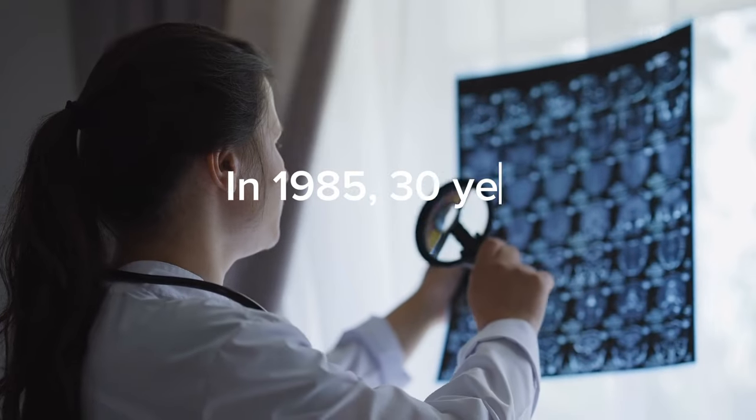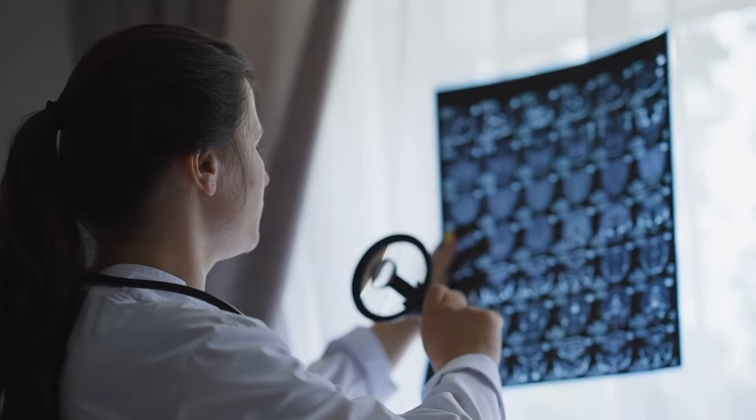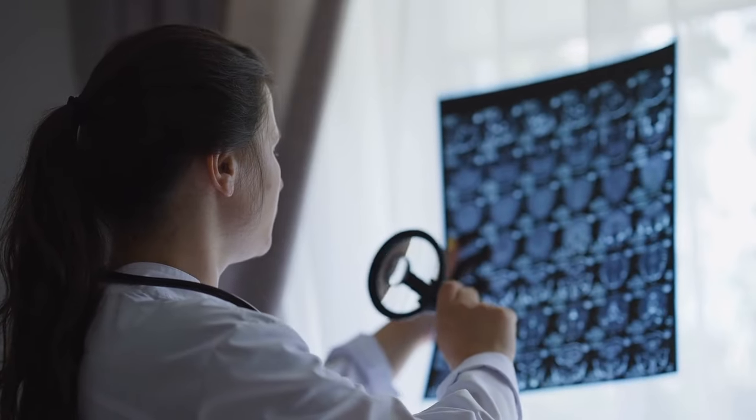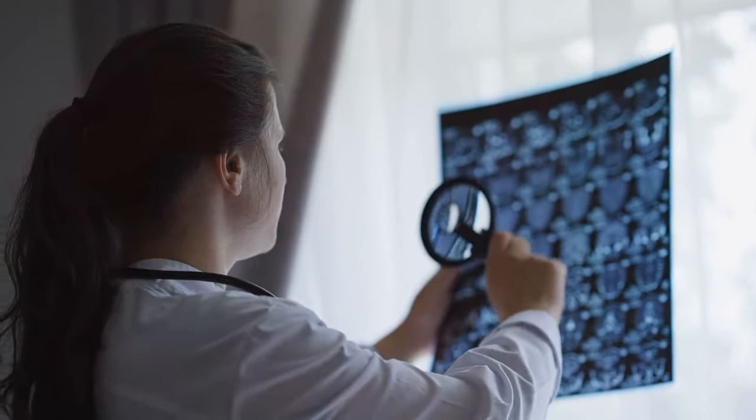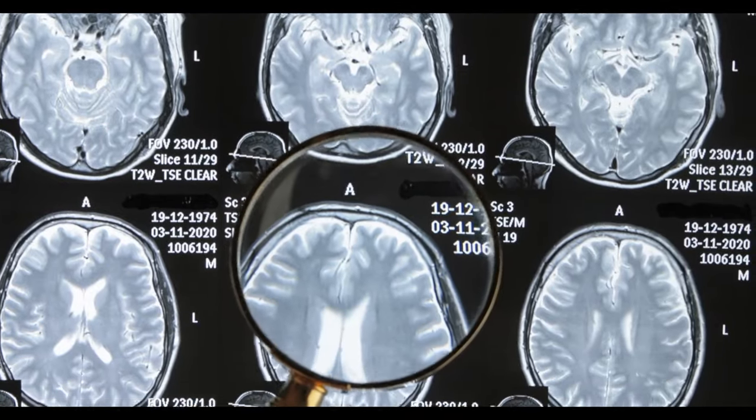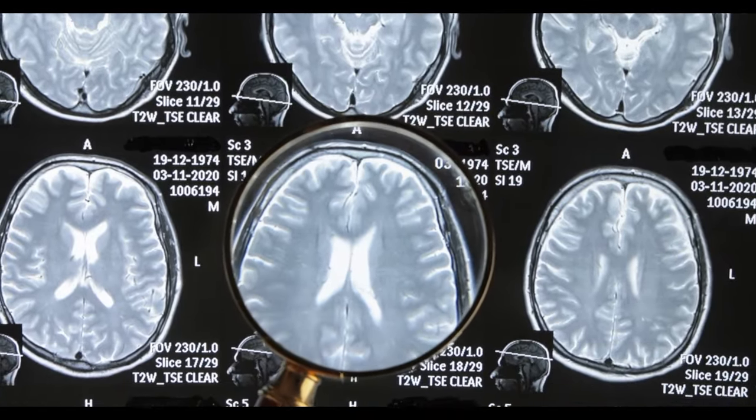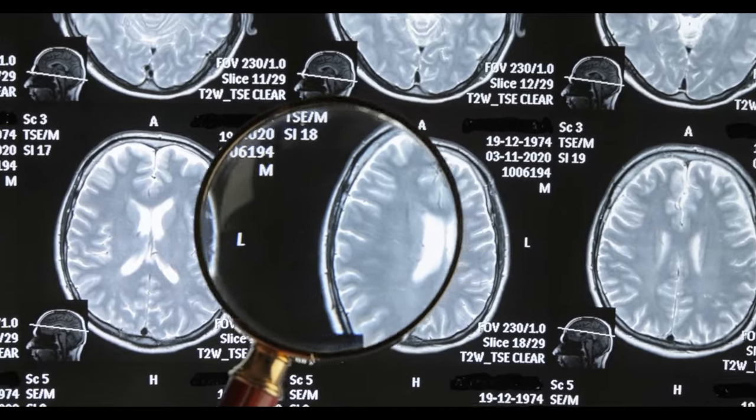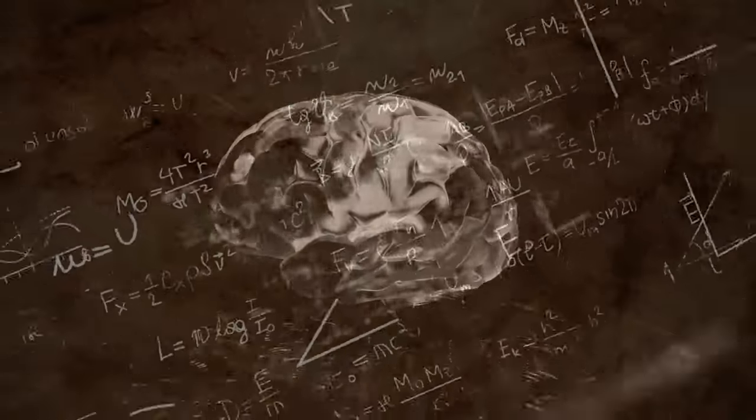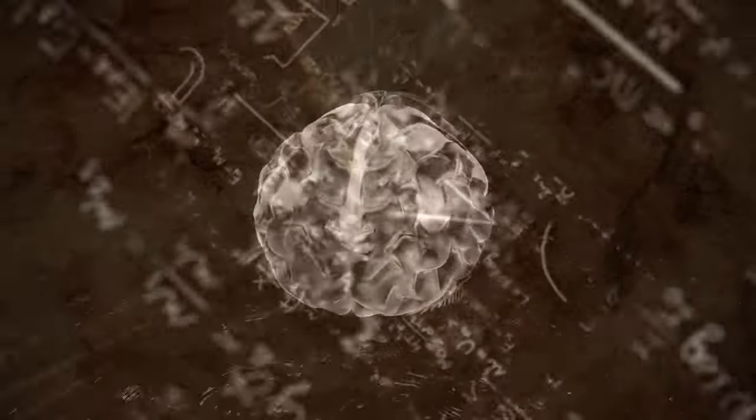In 1985, 30 years after the first time the brain was stolen, a study was written about Einstein's brain. Many neurologists have written many papers about this genius's brain over the next 28 years, which showed that Einstein's brain was very different from the brains of most people.